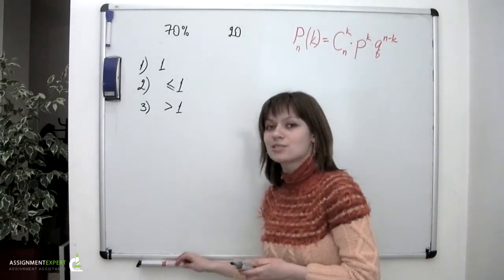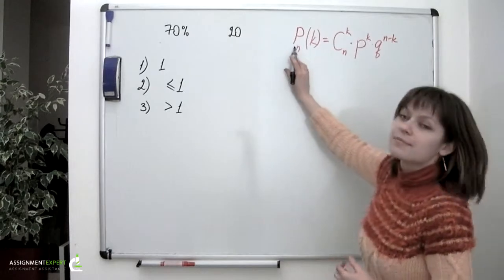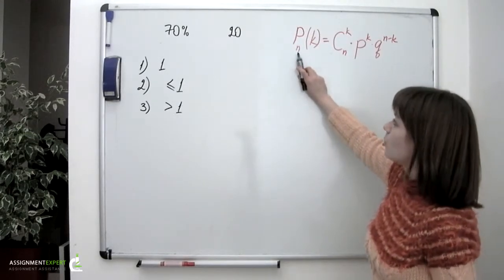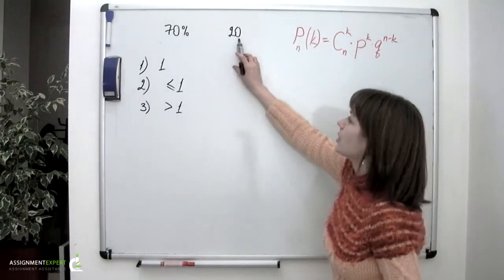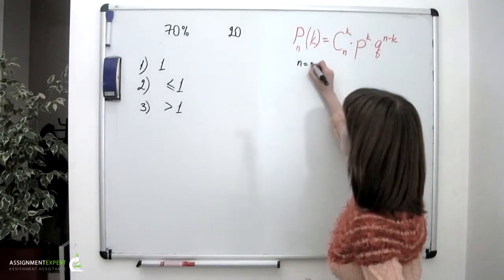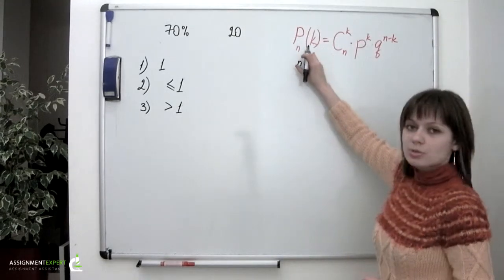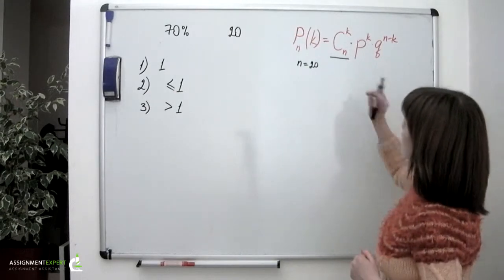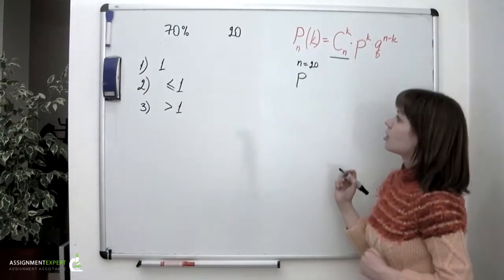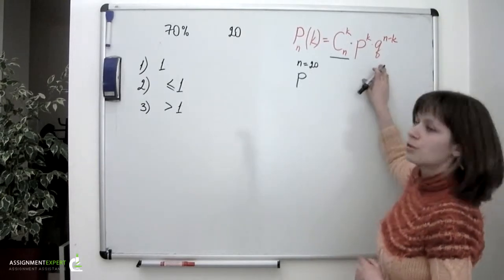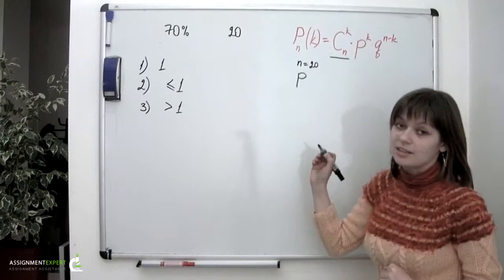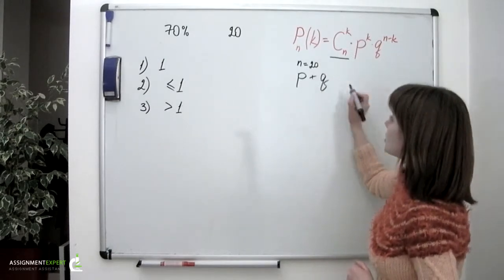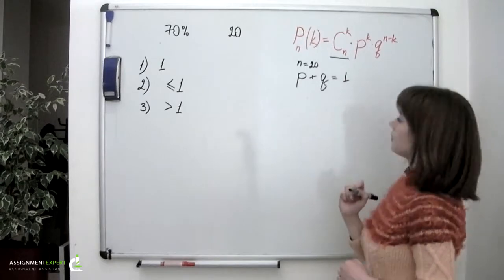Let's figure out what each variable stands for in this formula. Capital P is the probability itself. Small n stands for the number of trials, which in our case is 20 because we asked 20 couples, so n equals 20. K stands for the number of successes. Small p is the probability of success, and q is the probability of failure. Clearly, the probability of success plus the probability of failure equals 1.